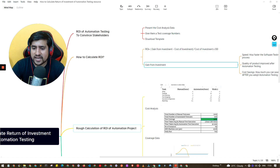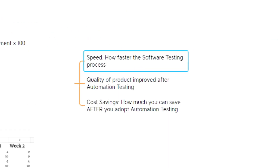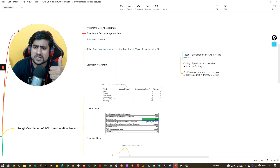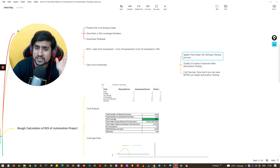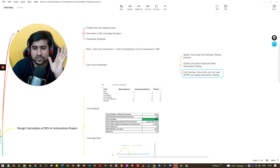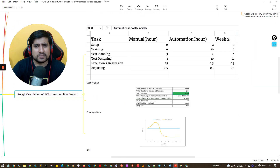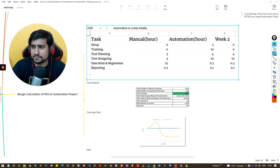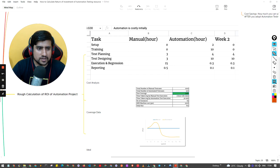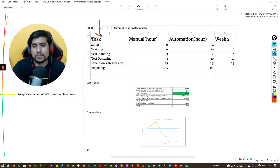Looking at the gains from automation: you get speed, more quality, and cost savings because your manual efforts are reduced by introducing automation in your regression. Now let's calculate a return using a random example. In the traditional way, here's a project we want to test. We compare manual hours versus automation hours across four weeks — week one, week two, week three, and week four.